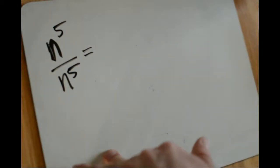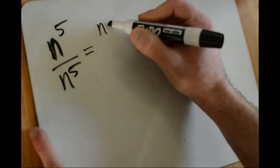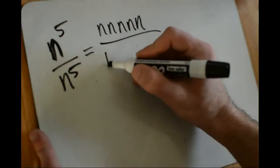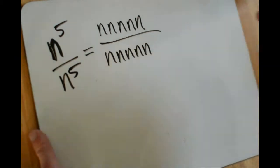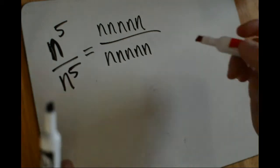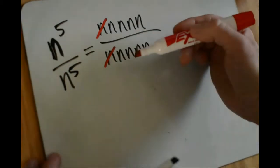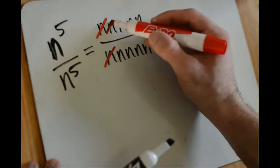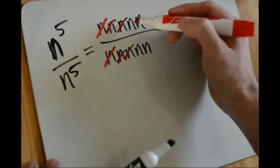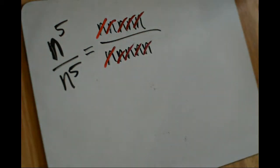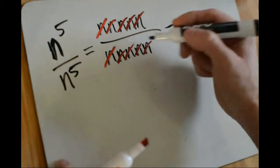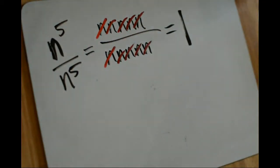The first way I'd like to simplify this is by expanding everything out and seeing what happens. In the numerator I have n to the fifth, so I have five factors of n. In the denominator I have n to the fifth, so I also have five factors of n. Anytime you're dividing a number by itself, you get one. Each pair of n's in the numerator and denominator divide and become one — each of these pairs has become one, and I don't have any factors of n left over. In the end, everything divided out to be just one.